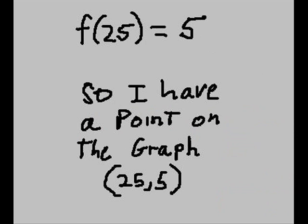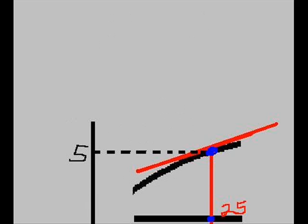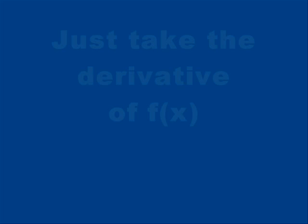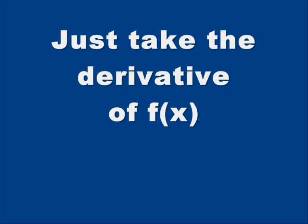So I have a point on the graph now: x equals 25, y equals 5. The point is (25, 5). So I'm going to draw a tangent to this point (25, 5). So I need m. How do I get it? Well, I just take the derivative of f(x).